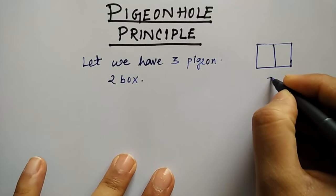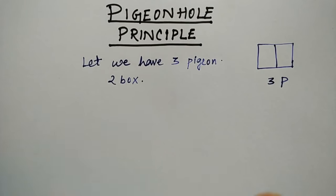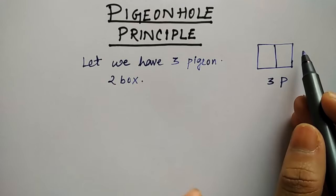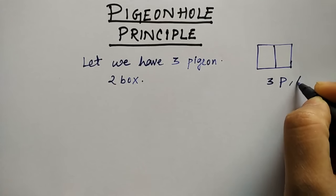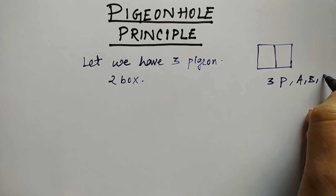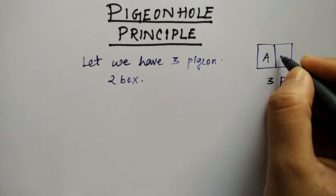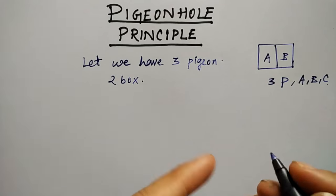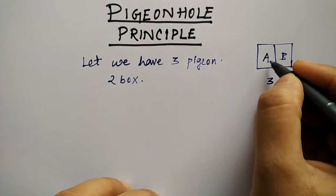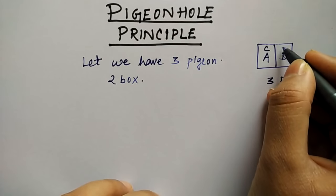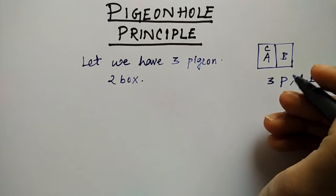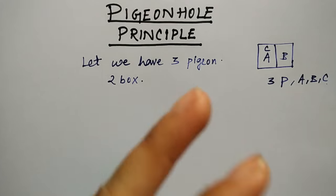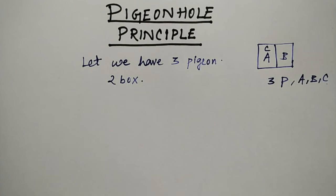I have two places but three pigeons. So how do we accommodate three pigeons into two boxes? There are three pigeons — A, B, and C. I'll keep pigeon A here and pigeon B here, so where will pigeon C go? Either we keep C with A or we keep it with B. So one of the two places is occupying two pigeons and the other is occupying one pigeon.